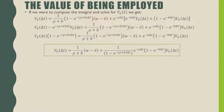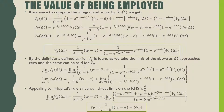The key result, shown in the green box, is that VE at interval delta T equals 1 over (rho plus B) times (W minus E-bar), plus 1 over (1 minus e raised to the power of negative (rho plus B) times delta T), multiplied by e raised to the power of negative rho delta T times (1 minus e raised to the power of negative B delta T) times the value of being employed at an interval of length delta T. By the definitions defined earlier, VE is found as we take the limit of the above as delta T approaches zero, and the same applies to VU at delta T.